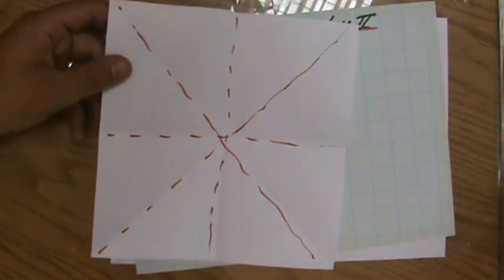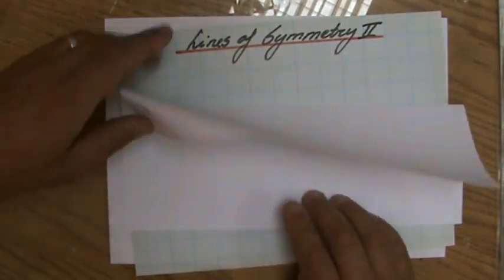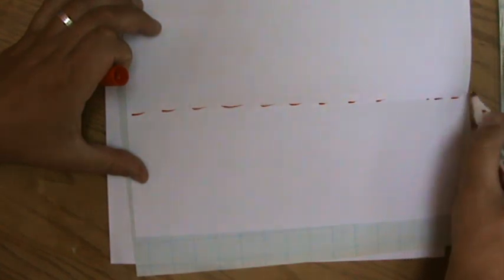And now for a rectangle, a lot of students think that also has four lines of symmetry. Because a rectangle has a horizontal line of symmetry, as you can see. The top is exactly on the bottom, so I'm already going to sketch that one. That indeed is one line of symmetry.